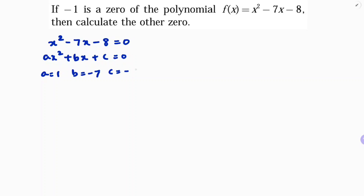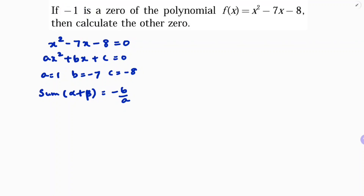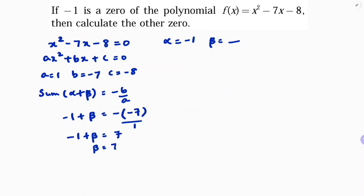Sum of the zeros: α + β = -b/a. Let α be the given zero, so α = -1. Then minus 1 plus β = -(-7)/1, so minus 1 plus β = 7, giving β = 7 + 1 = 8. So the other zero is 8.